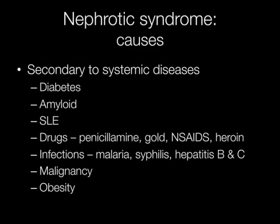Diabetes is the commonest systemic disease causing nephrotic syndrome. Other causes include amyloid, systemic lupus erythematosus, drugs, infections, malignancy, and obesity.